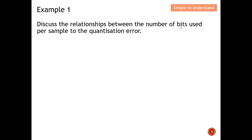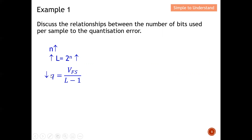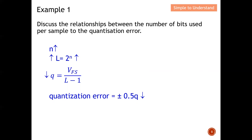Let's discuss the relationship between the number of bits per sample and quantization error. When N increases, the quantization level L increases because L = 2 to the power N. When L increases, Q decreases — Q describes the gap between two quantization levels. When Q decreases, I have a better quantization error. The maximum possible quantization error is plus or minus 0.5Q, so reducing Q means I can more accurately represent the analog signal in digital format.